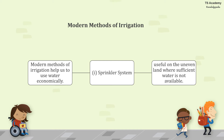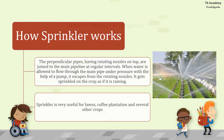Modern methods of irrigation help us use water economically. The first is the sprinkler system, which is useful on uneven land where sufficient water is not available. Perpendicular pipes with rotating nozzles on top are joined to the main pipeline at regular intervals. When water flows through the main pipe under pressure from a pump, it escapes from the rotating nozzles and gets sprinkled on the crop as if it is raining. It is generally useful for lawns, coffee plantations, and several other crops.